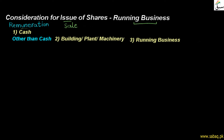When companies issue shares, what can they take in return? When companies issue shares, the public can give cash. In addition to cash, there can be other considerations — the other party can give assets such as building, plant, or machinery in exchange for shares. The third type of consideration, which will be focused on today, is a running business.